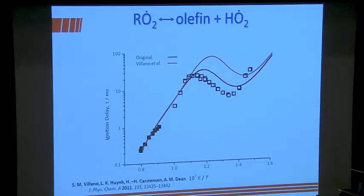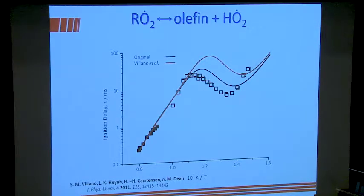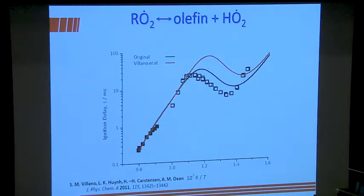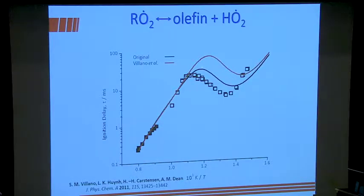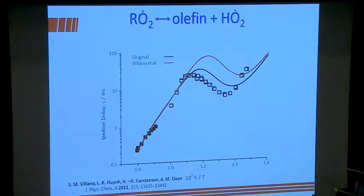We take the rate constants for RO2 giving olefin plus HO2 from Stephanie Villano, Carstensen-Dean, and it makes a big difference — decreases the reactivity. We hadn't enough of the five-membered ring contribution. But remember, these are effectively ten times faster — an order of magnitude faster — than what we would have been using in the previous mechanism. Hence the big jump relative to what I showed just before the break for this reaction class.